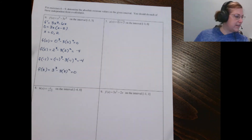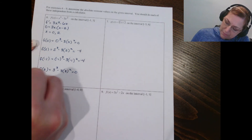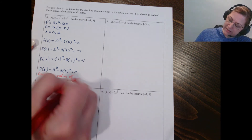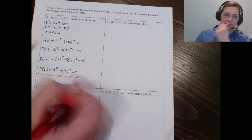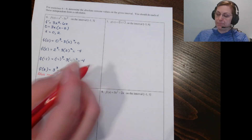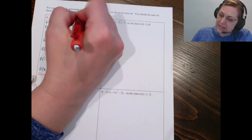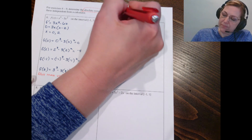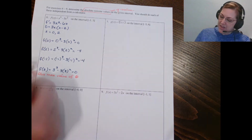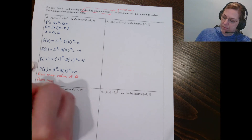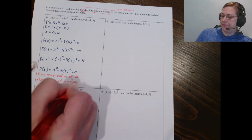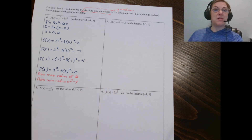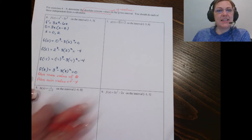We've got an interesting scenario — I've got an absolute max value of 0. I'm listing just the y-values because it asked me to determine the extreme values. And then I've got an absolute minimum value of negative 4.